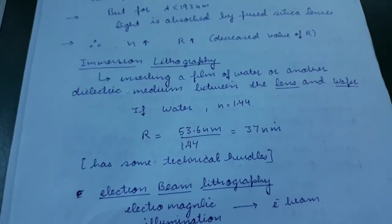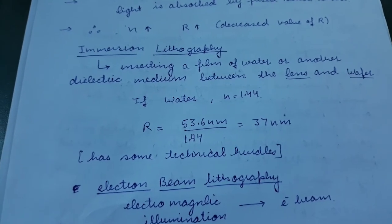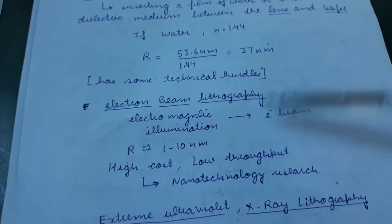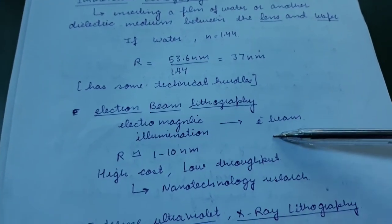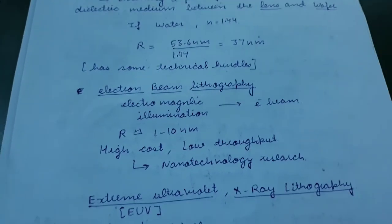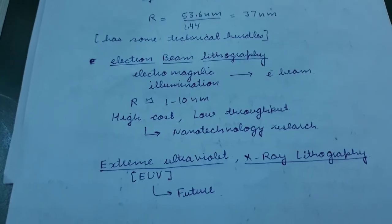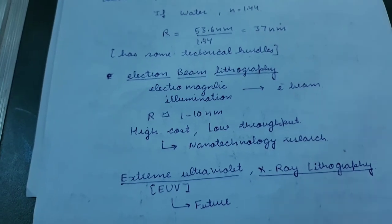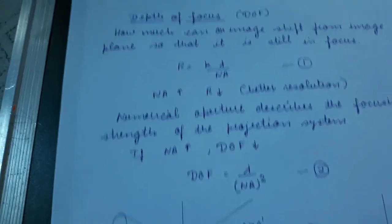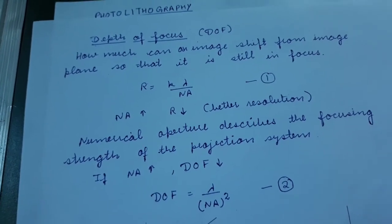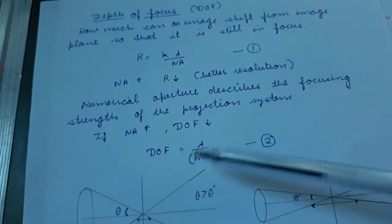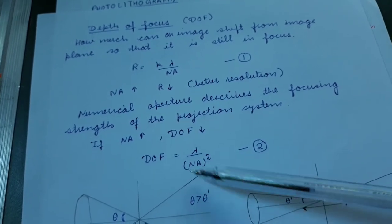This kind of immersion lithography has some technical hurdles because it is not easy to deal with liquid during photolithography. E-beam lithography uses electron beams instead of electromagnetic radiation, achieving resolution down to 1 to 10 nanometers, but it is very expensive, low throughput, and usually used in nanotechnology. Extreme ultraviolet lithography and x-ray lithography also exist — x-rays have a lower wavelength so we expect higher resolution. Depth of focus is another important factor: it describes how much an image can shift from the image plane and still remain in focus. It is given by DOF = λ / NA².